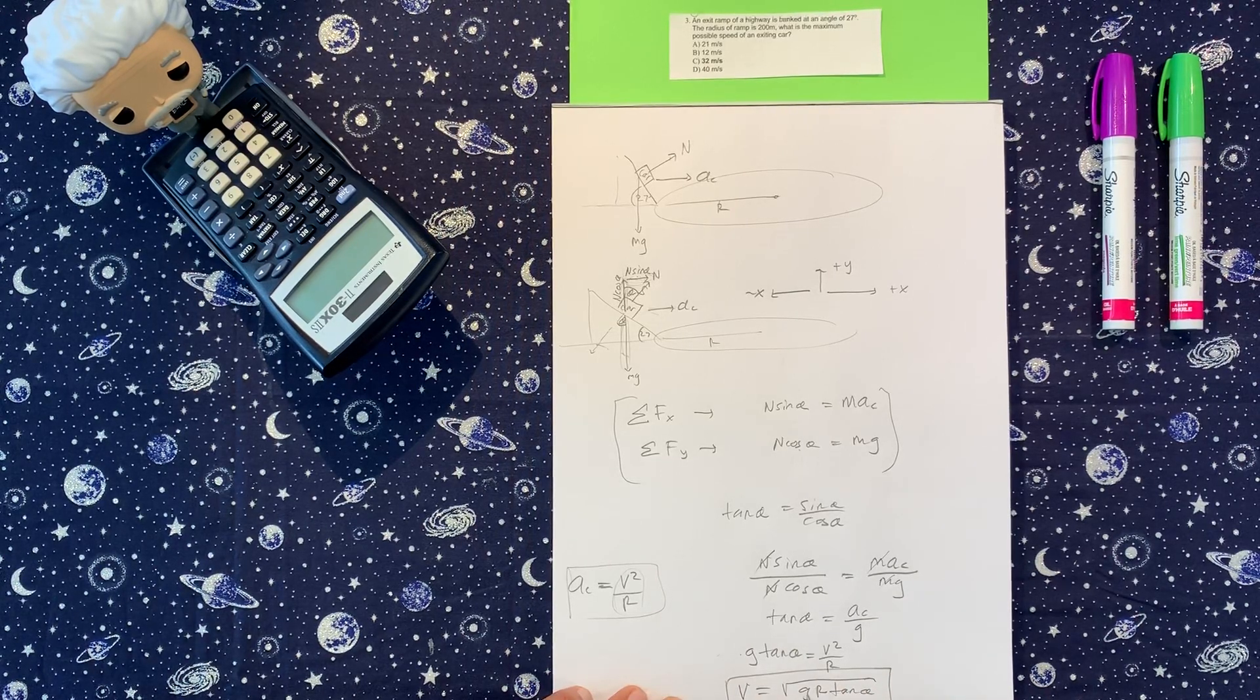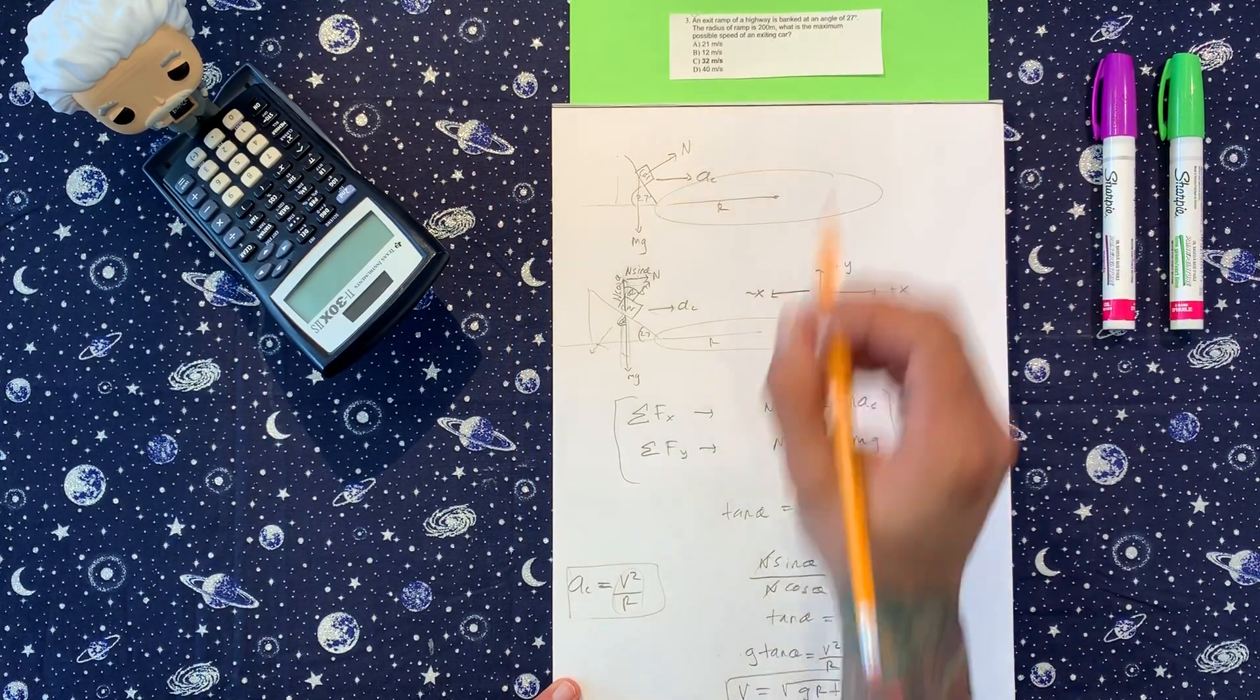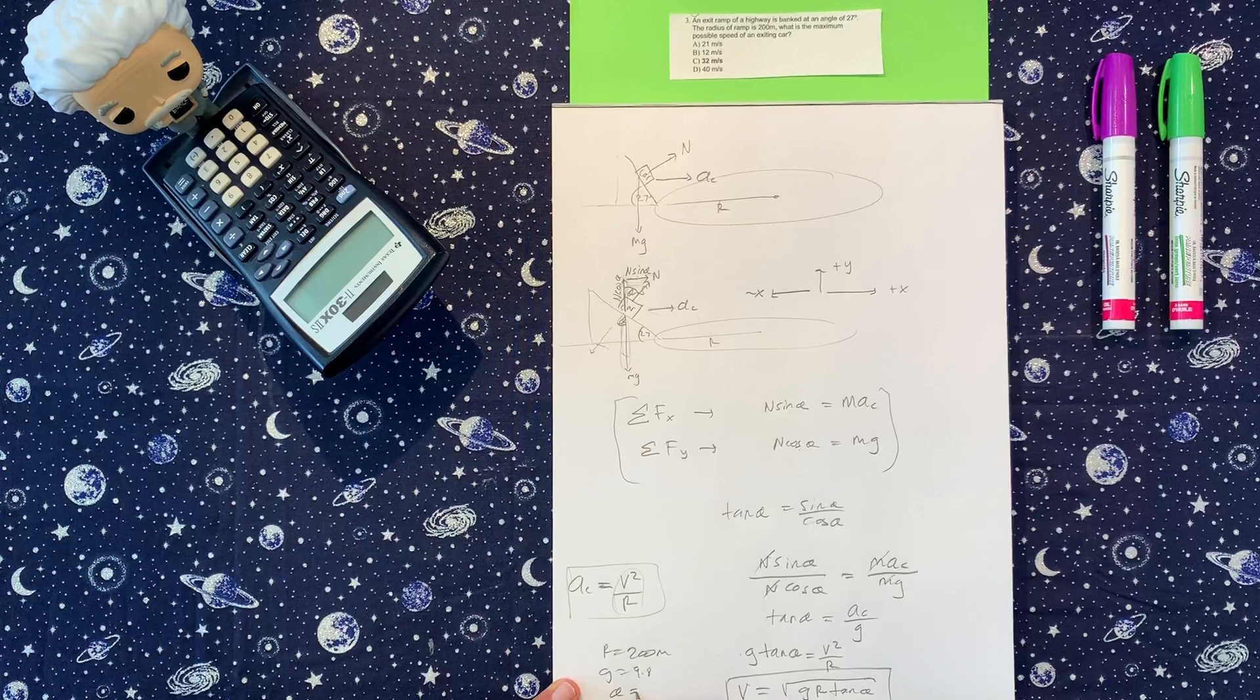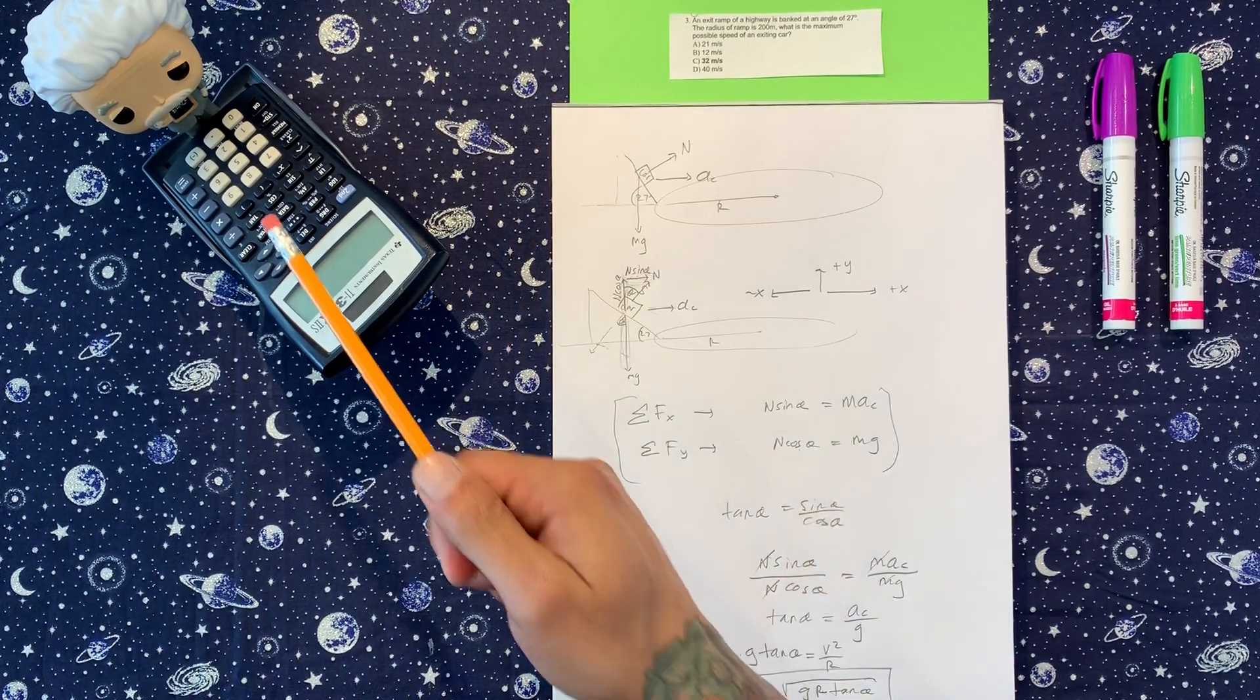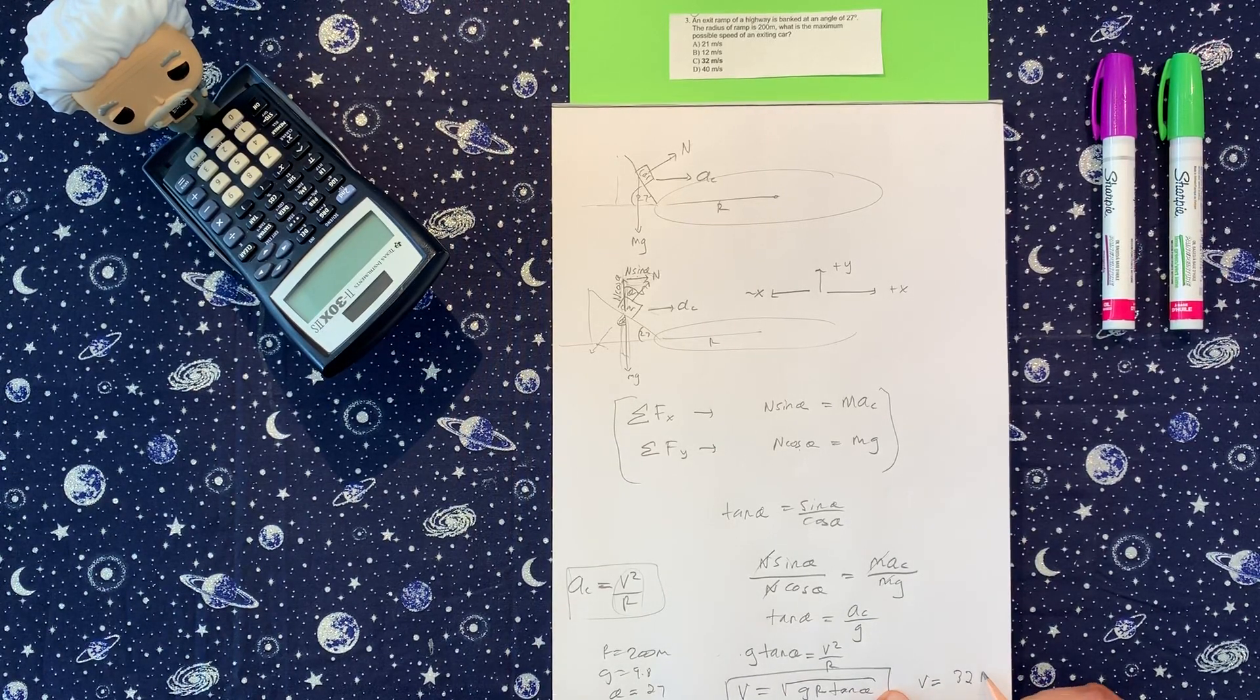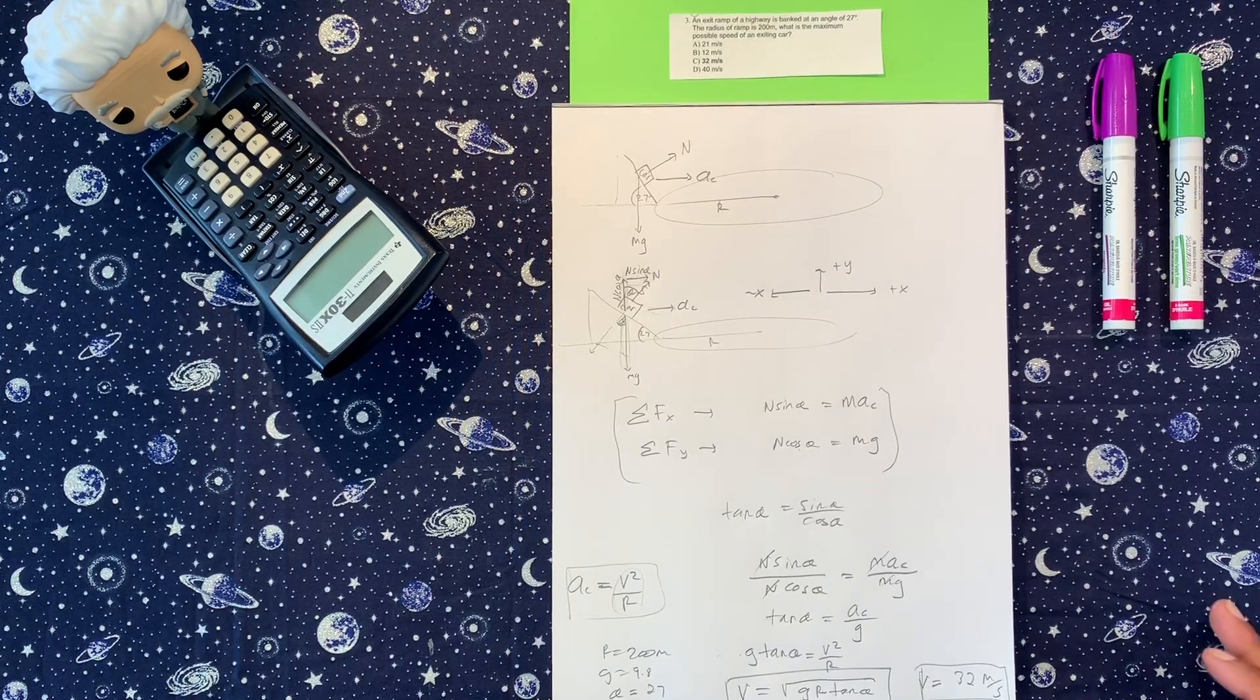We have all these values, we have gravity is 9.8. We have r, which is 200. Gravity is 9.8, and the angle we have is 27. So we put all this here, we're calculating it, and we got velocity is 32 meters per second. So that is option C. That's how we do that one.